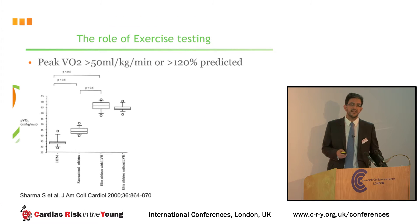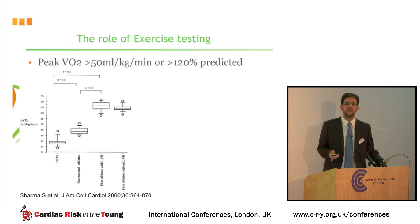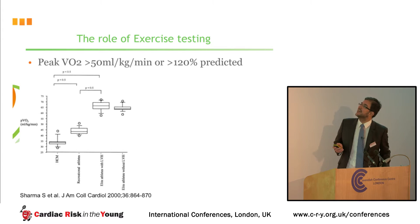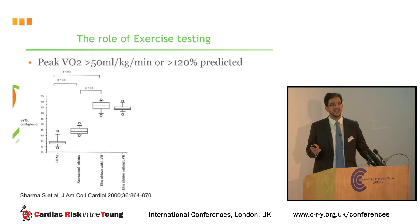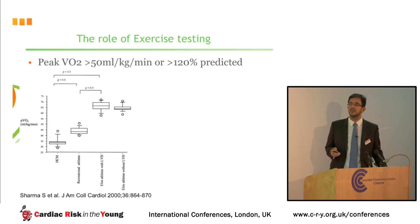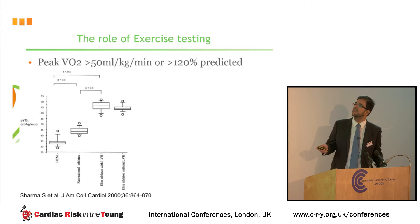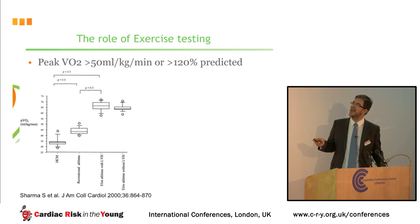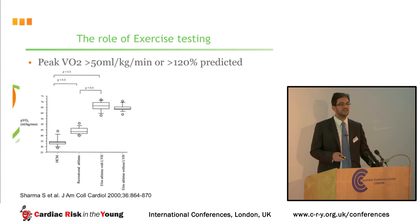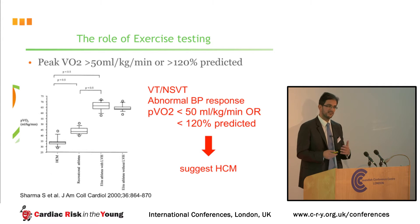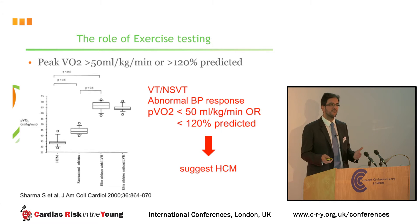What about the role of exercise testing? This is a study that Professor Sharma performed in 2016 — a pioneering study where we're still trying to replicate exactly the same thing. He looked at a cohort of HCM patients with mild LVH and athletic individuals who also had left ventricular hypertrophy, and provided values regarding peak VO2 in absolute and predicted terms for differentiating physiological from pathological LVH. Those are the values we have adopted, and obviously in your exercise test, if you see ventricular tachycardia or an abnormal blood pressure response, then you have your answer.